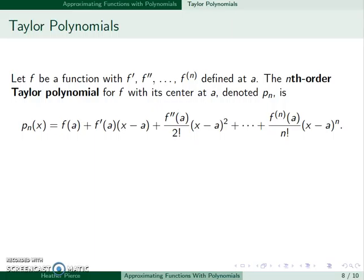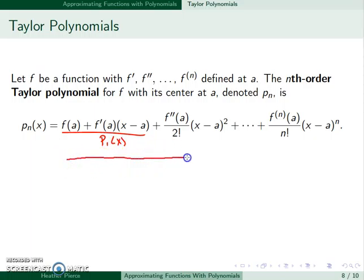Then we say the nth order Taylor polynomial for f with its center at a is f of a, plus f prime of a times x minus a — which is p1 — plus f double prime of a over 2 factorial times x minus a squared, which we had for our quadratic expansion. We continue this up to the nth derivative: the nth derivative of f at a over n factorial, times x minus a to the n.